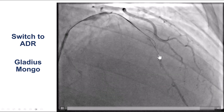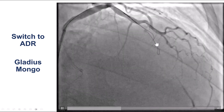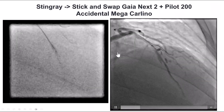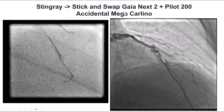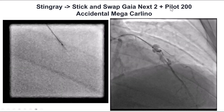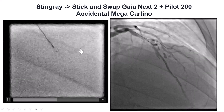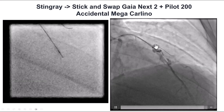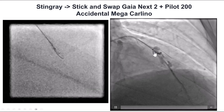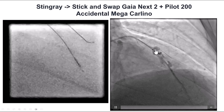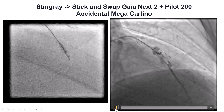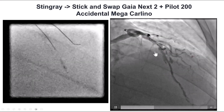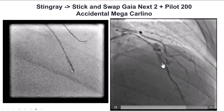We exchanged for a Gladius Mongo guidewire, which advanced nicely along the course of the vessel, tracking with it. We then tried to re-enter using the double blind stick and swap technique, alternating a Gaia NX2 with a PILOT 200, and we advanced a guide extension to prevent formation of a hematoma.